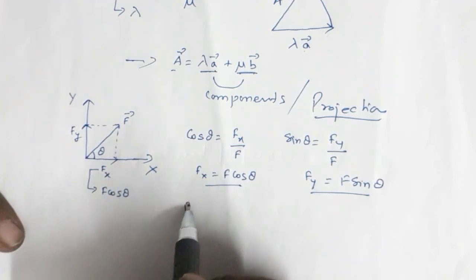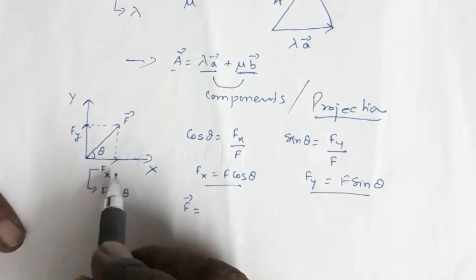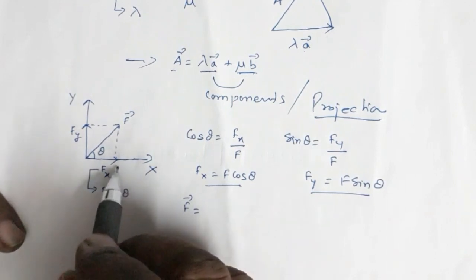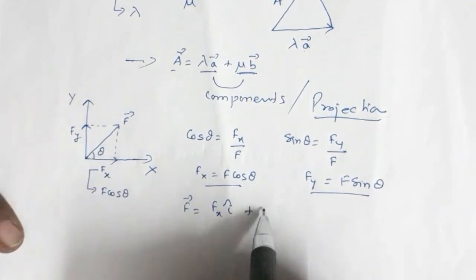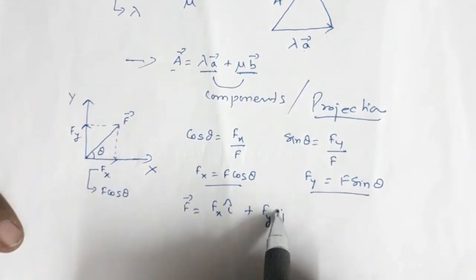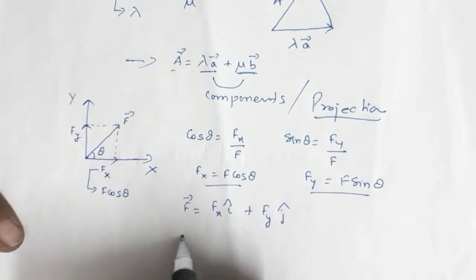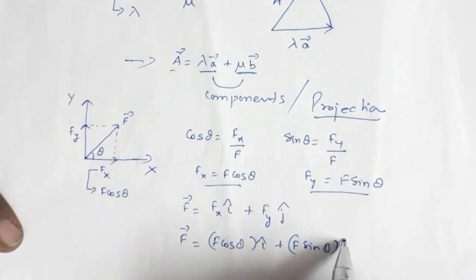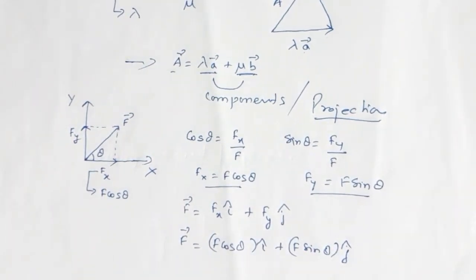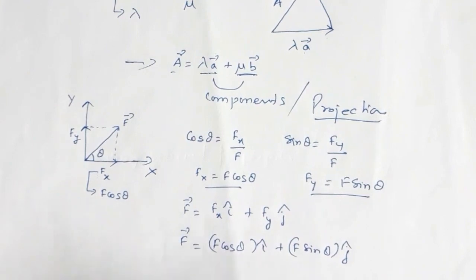So I can write vector f as: the component along the x axis is given direction by the unit vector i cap, and the component along the y axis by j cap. Since fx is f cos theta and fy is f sin theta, we get vector f equal to f cos theta i cap plus f sin theta j cap. This is another way of expressing the resolution of a vector into components.